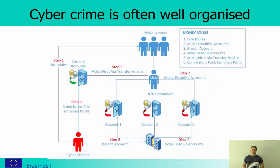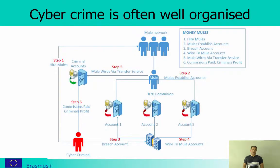And this is also what we see in this figure, where we can see that in the first step, you hire or recruit mules — in this example you simply pay them to do it. Then the cyber criminal has the mules establish these accounts in step two, so they are available for the cyber criminal to use. The criminal then makes a breach on some account and steals funds, transferring them to the mules' newly established accounts in step four. Then the funds are spread out to the different mules. They might keep part of the money, and then they take out the money and transfer them via a non-traceable transfer service — that is step five — to the criminal's accounts, who can then take out the money.